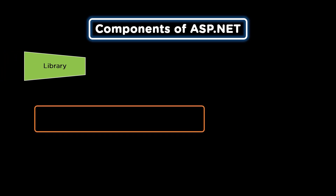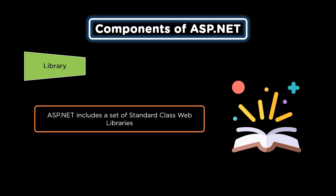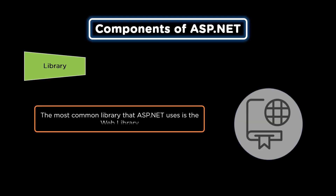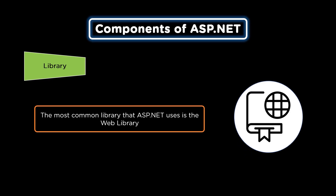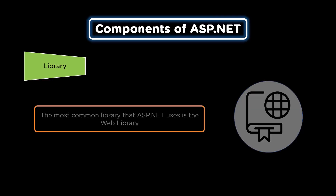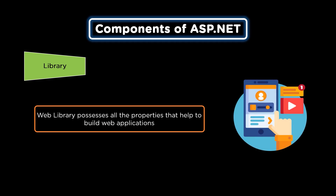The second component is the Library. Library is a pre-written class or a coded template that a developer can use while developing an application. The most common library used for ASP.NET web applications is the Web Library. Web Library is a part of a website that offers a collection of websites when users browse, and it possesses all the properties that help in building a web application.